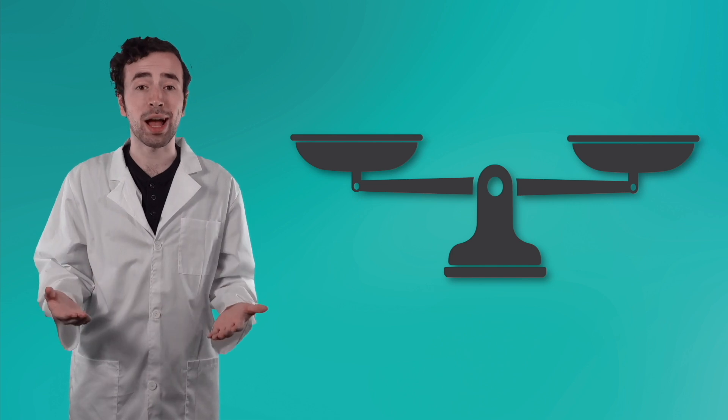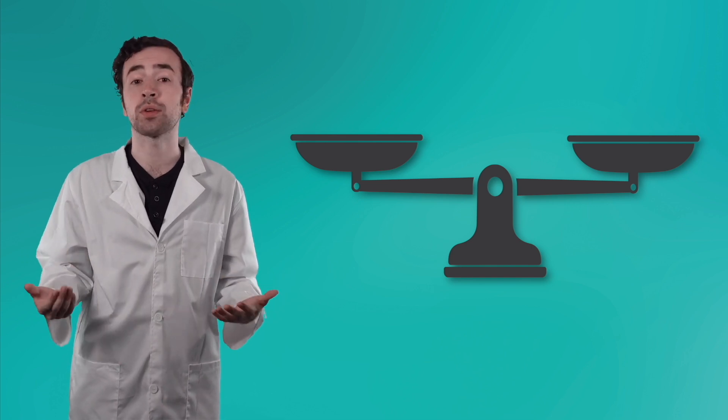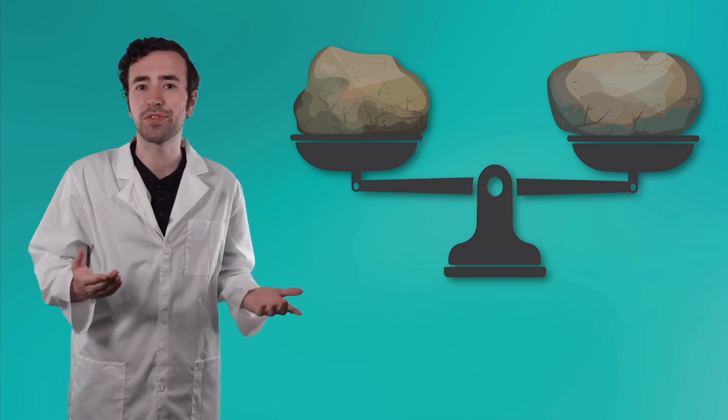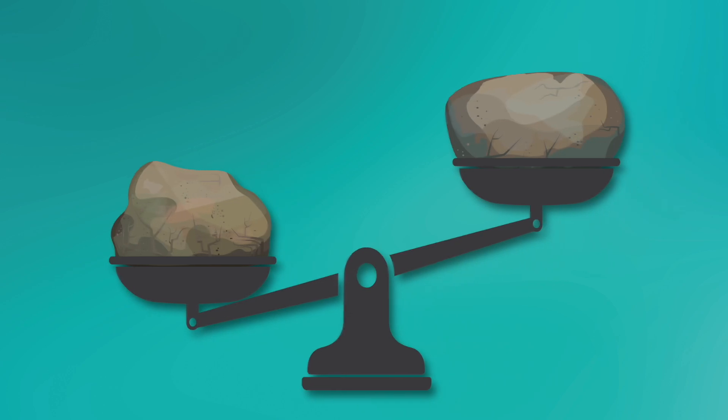The next tool in our science toolbox is a balance. This tool allows us to measure how heavy something is compared to another object. Suppose you have two rocks and you want to know which one's heavier. You could use a balance to find out. The object that is lower on the balance is heavier than the object that is higher.